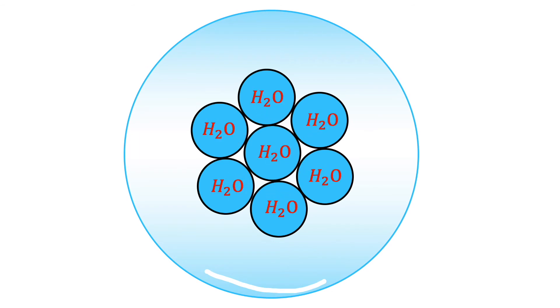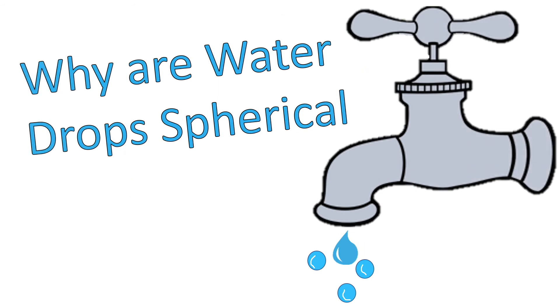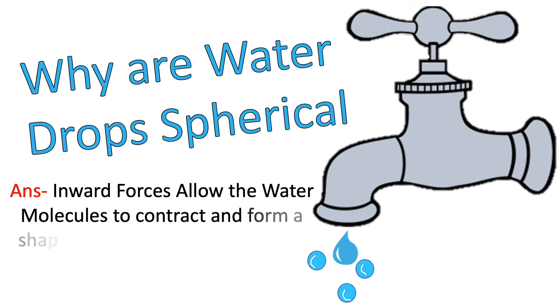So here it contracts to form a shape that acquires minimum surface area, which is a sphere. Now we can answer the question: why are water drops spherical? Because inward forces allow the water molecules to contract and form a shape that acquires minimum surface area, which is a sphere.